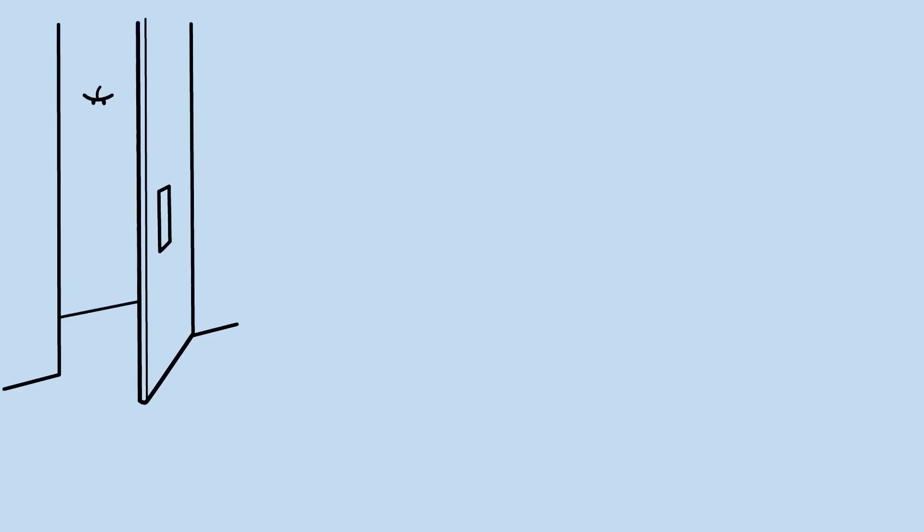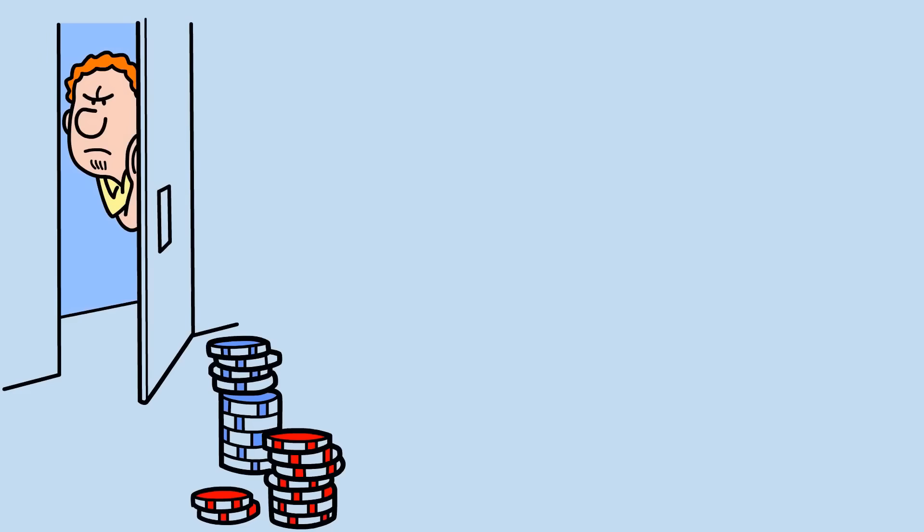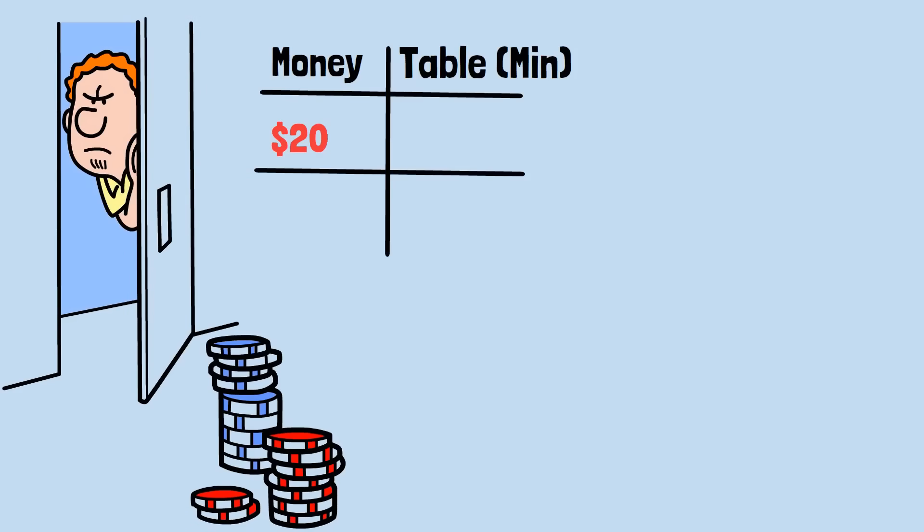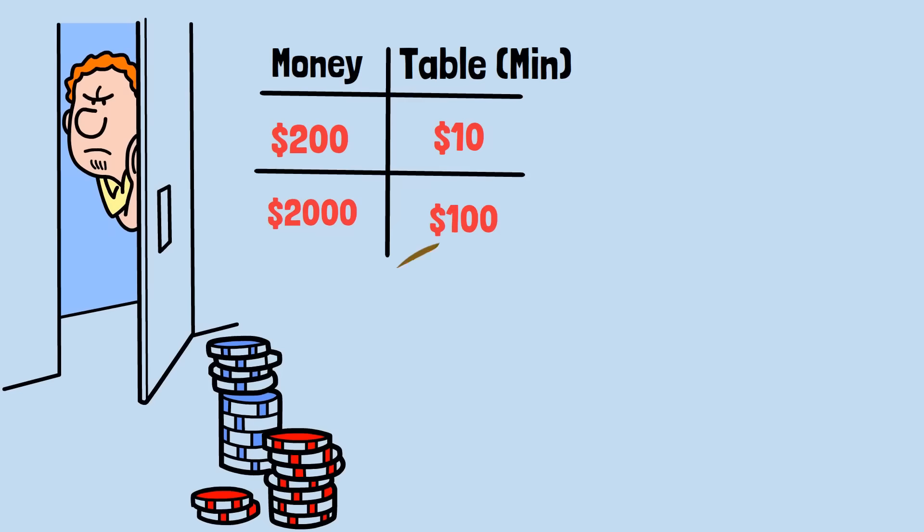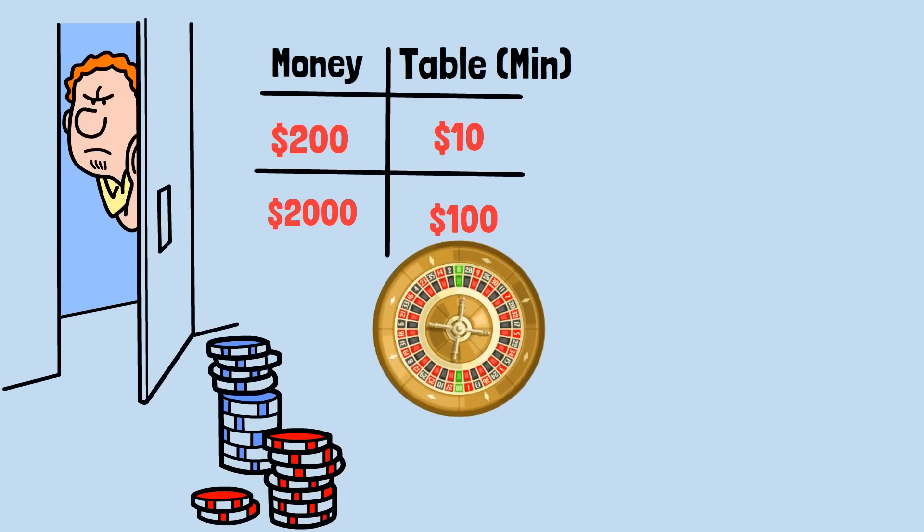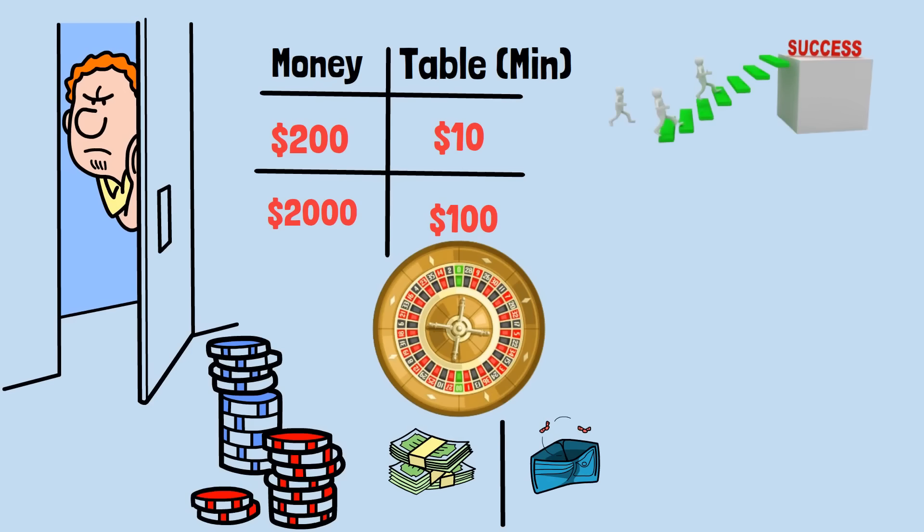Let's examine a more realistic scenario. Suppose you walk into a casino with 20 betting units—perhaps $200 at a $10 minimum table, or $2,000 at a $100 table. You're going to bet one unit at a time on red or black until you either reach a profit goal or go broke.